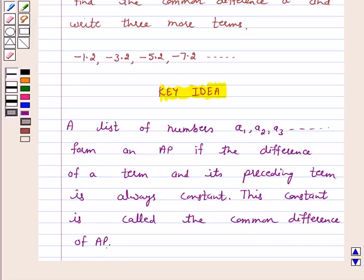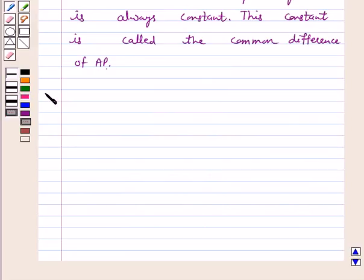Let's start the solution. Our given list of numbers is minus 1.2, minus 3.2, minus 5.2, minus 7.2, and so on.